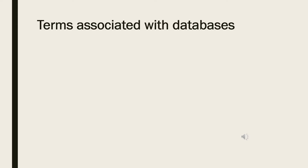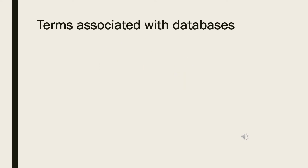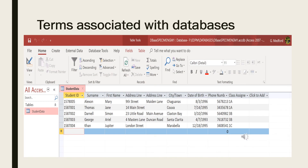Within a database, related data are grouped into tables. Each table consists of rows and columns. This database was created using Microsoft Access. To convert your list of data into tables, you create a table for each type of entity such as a product, sales, customers, students, orders, etc. Each row of a table is called a record or tuple. Records include data about something or someone. In the example shown, data is being stored about students — there are five student records displayed.